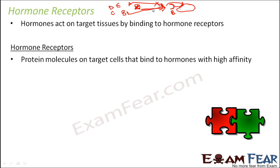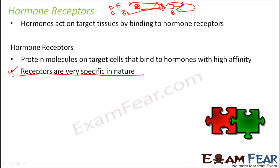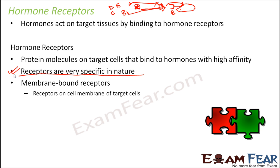Receptors are very specific in nature — this hormone can bind only to this receptor, and this receptor will bind only to this hormone. That specificity is very important to understand the concept, because not every hormone can bind to every receptor. There are two types of receptors: membrane-bound receptors, which are present on the cell membranes of the target cell, and intracellular receptors.